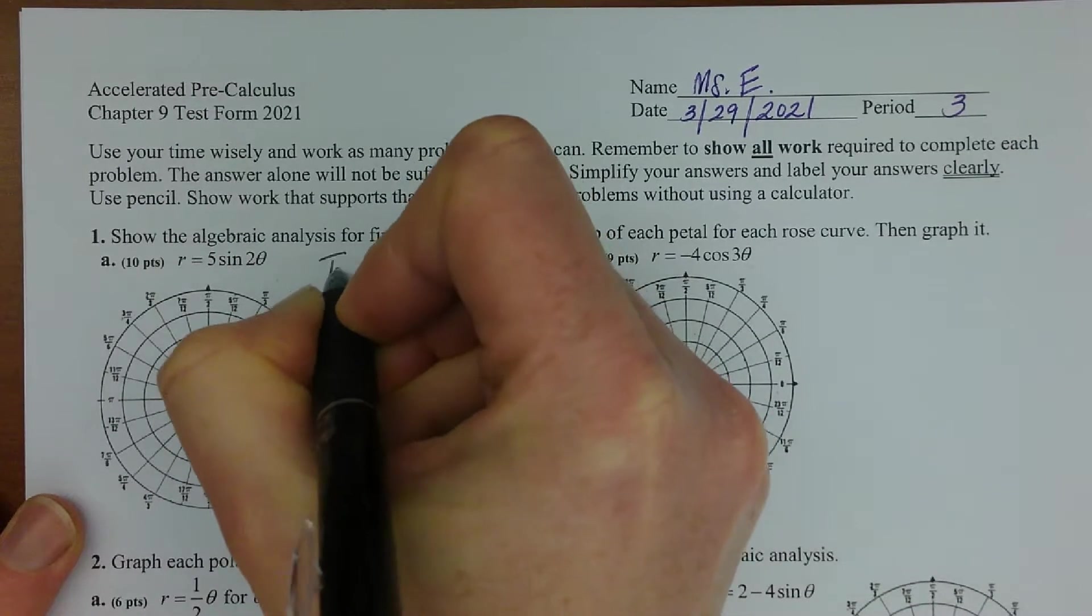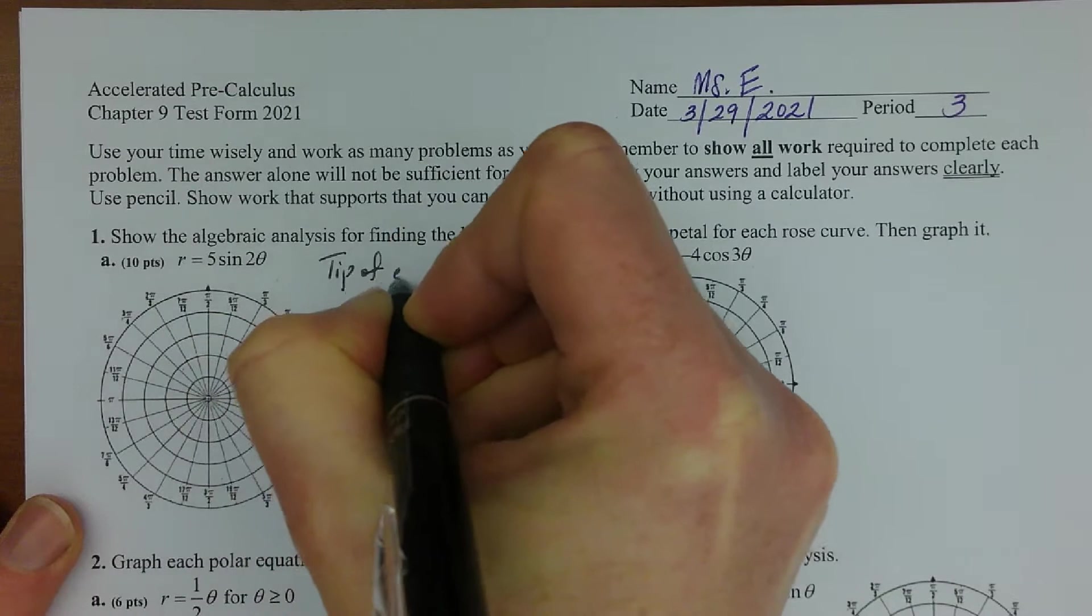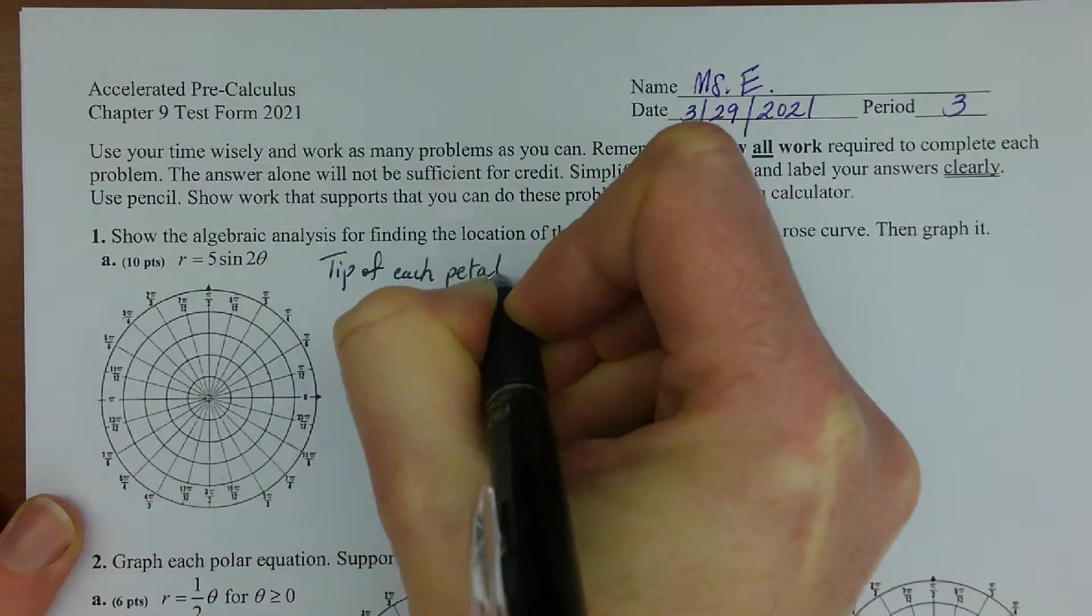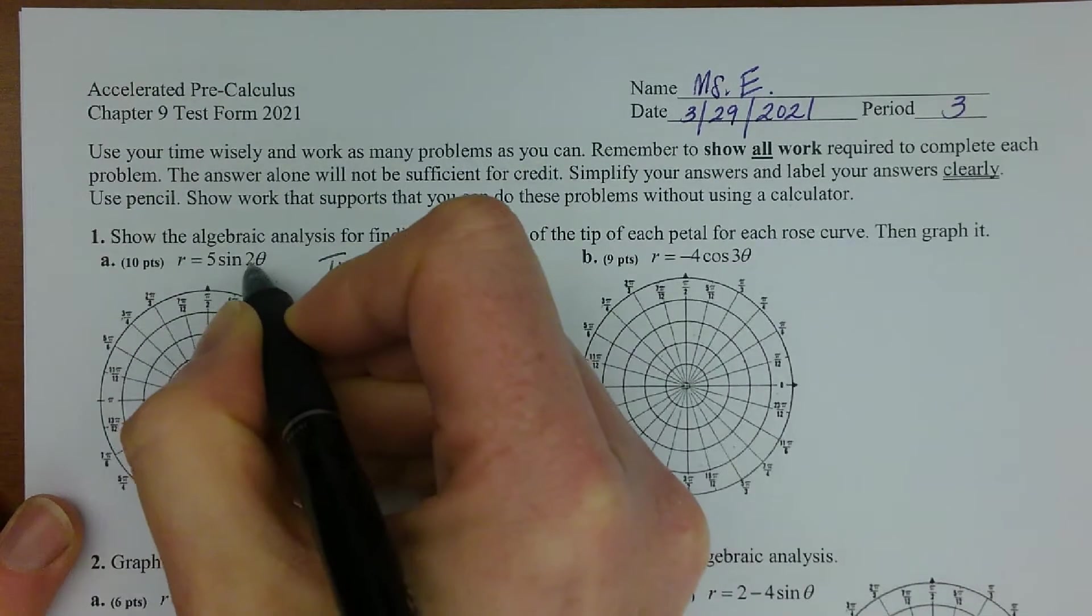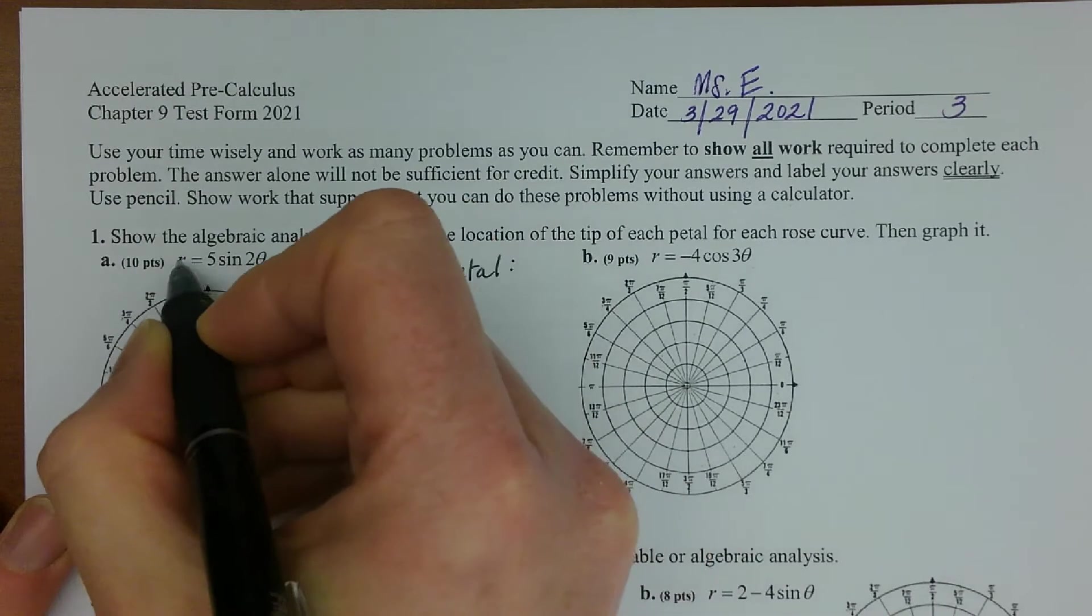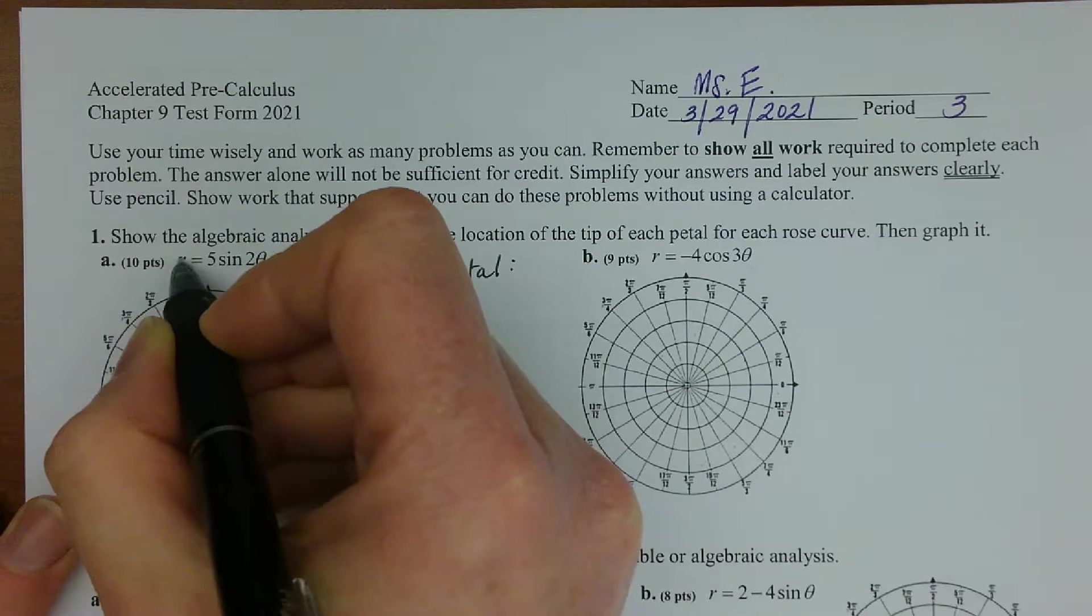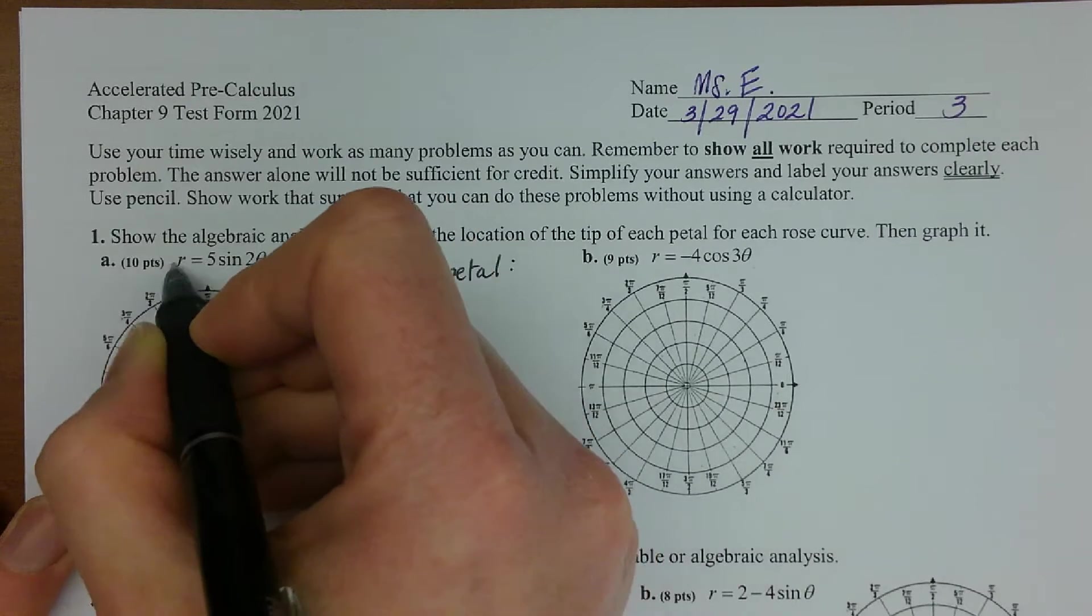And then to find the tip of each petal, to get double the number of petals we just show in our work that we know that we get different ones from positive and negative r values.